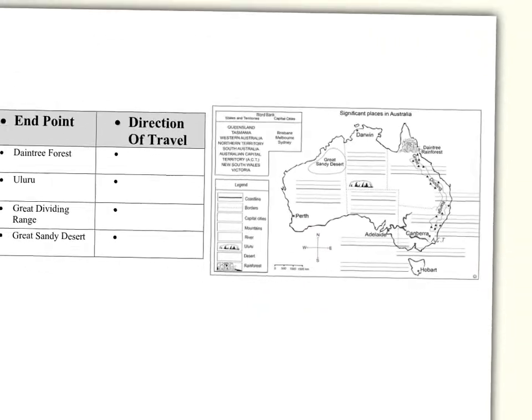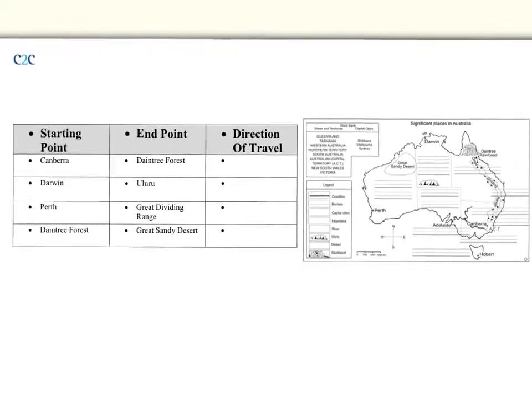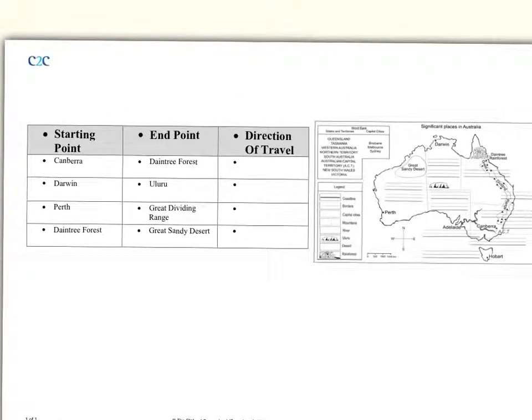Let's have a look at some of the directions of travel using a compass for this table here. If I have a starting point of Canberra, Canberra is just here, which is the Australian Capital Territory, just here. And I want to go to the Daintree Rainforest up in Queensland, just there. Using my compass here, in what direction will I be heading if I start at Canberra and head up to the Daintree Rainforest? My direction will be north. Did you guys manage to work that out, that you would be traveling north by looking at your compass?